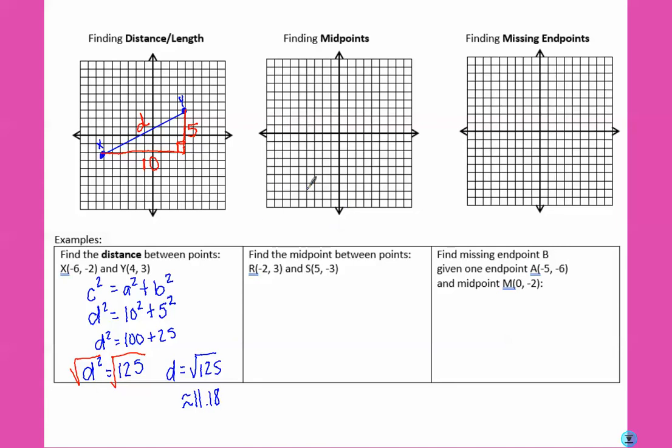Finding the midpoints. So this one asks us to find the midpoint between two points, R, which is at negative 2, 3, and S, which is at 5, negative 3. So let's start by plotting our points. Negative 2, 3. And 5, negative 3. So this is S. And this is R. We want to find the middle.